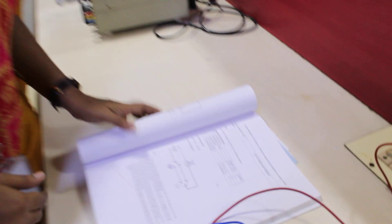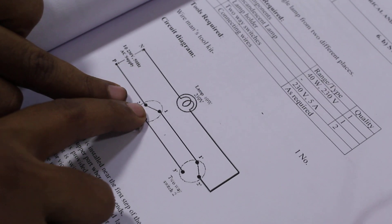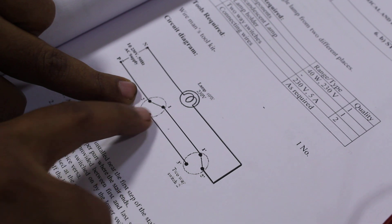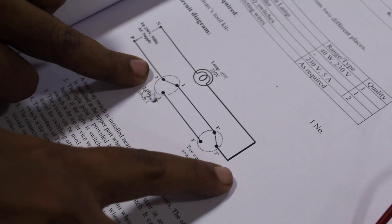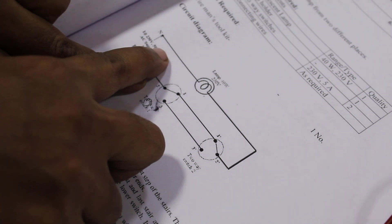Now we will see the circuit connection. From the phase it is given to a two-way switch. I can turn this on or connect it here. If I turn this on, it will make a closed path and make the light glow.